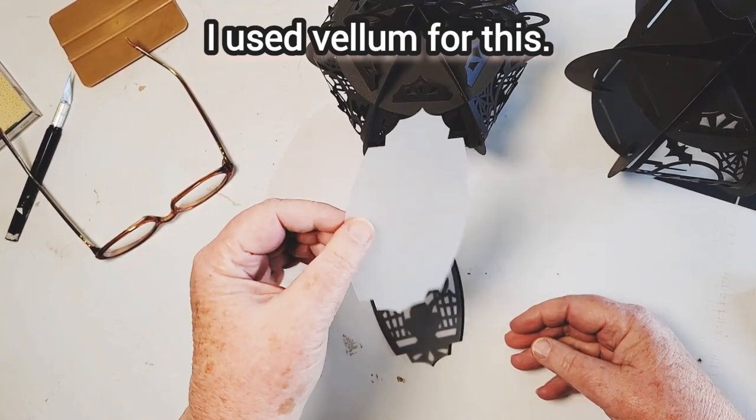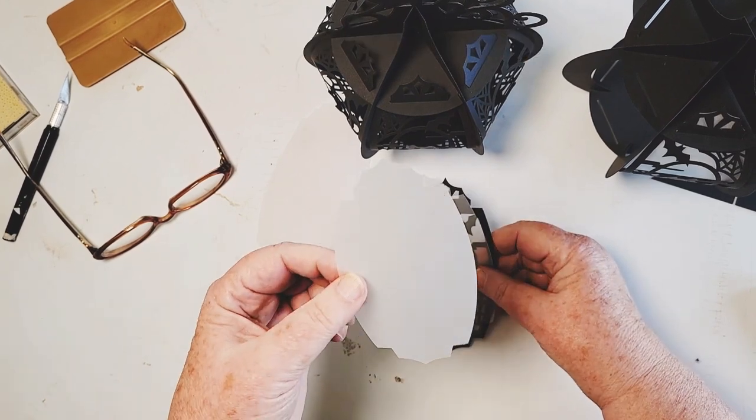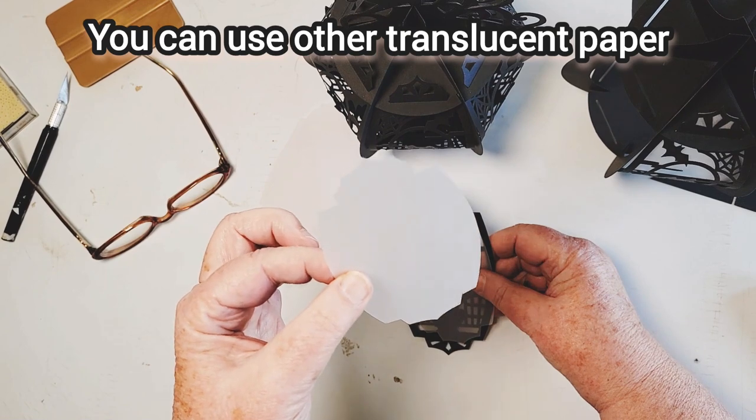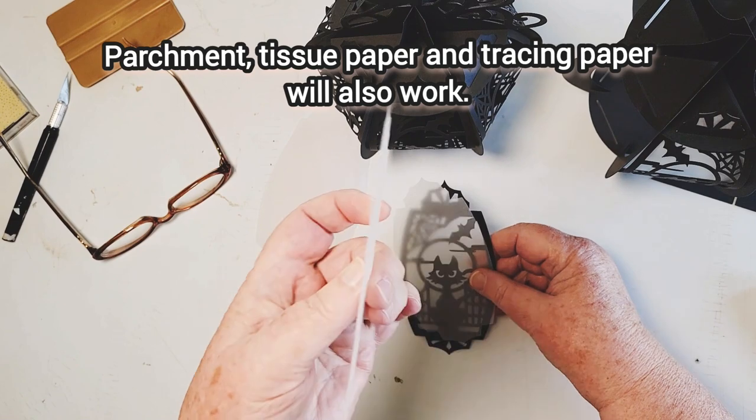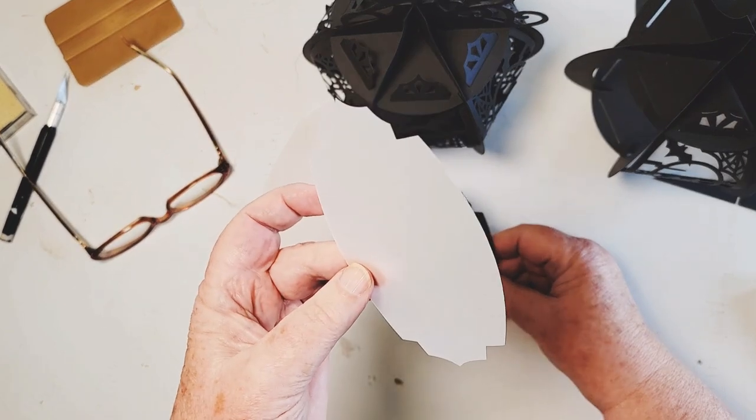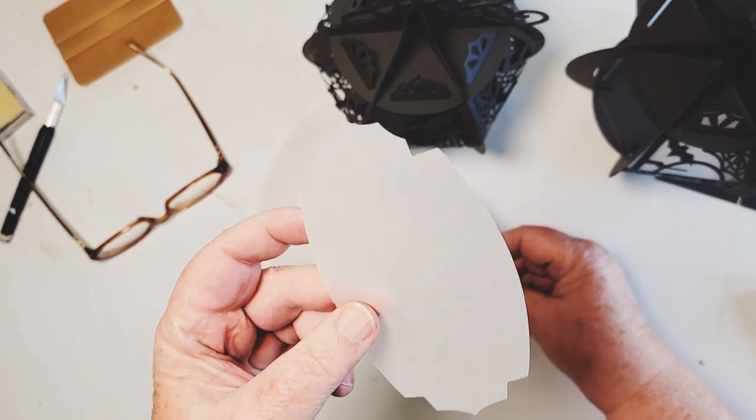Now I'm going to use my vellum paper to put inside of the panels. I've used different materials for this. I've used some parchment, which I had to cut by hand because it does not stick to my mat. The vellum is beautiful and works really well. Tracing paper would work. Tissue paper will work, but if you can get your hands on some of this, this is going to be the best, I think.